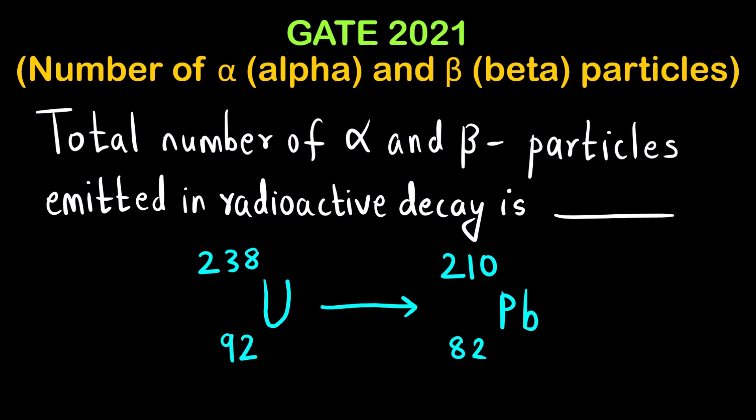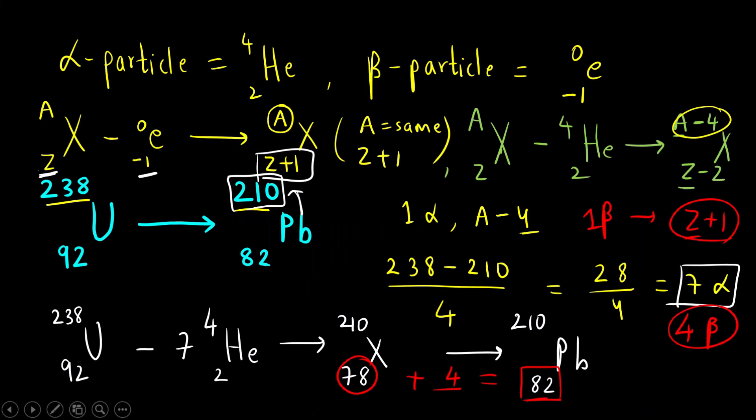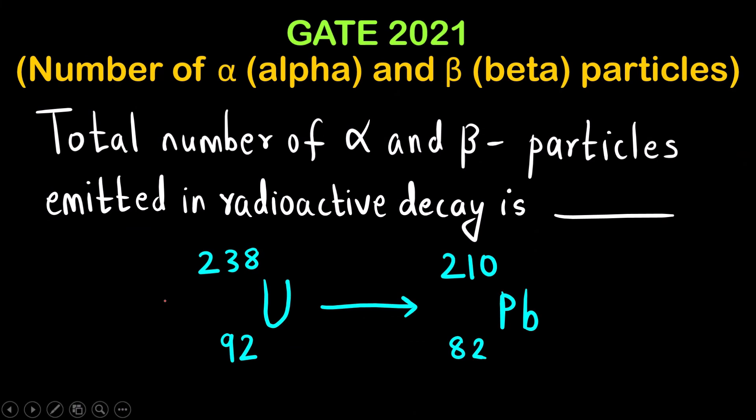What is the question? Total number of alpha and beta particles. We have to add both of them. 7 plus 4 is 11. The correct answer for the question is 11.